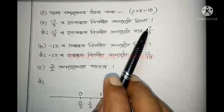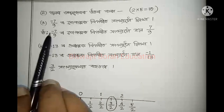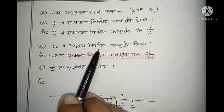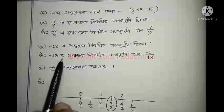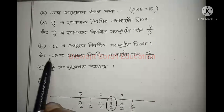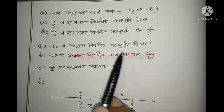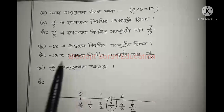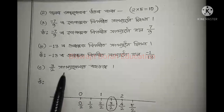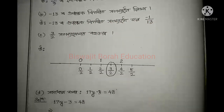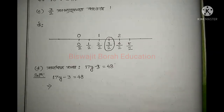Now the solutions. Sub-part A: The multiplicative inverse of minus 7 by 9 is minus 9 by 7. Sub-part B: The multiplicative inverse of minus 13 is minus 1 by 13. Sub-part C: 3 by 2 — the multiplicative inverse is 2 by 3. This is the solution.